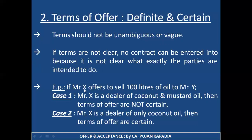To make our understanding clearer, here is a good example. Mr. X offers to sell 100 liters of oil to Mr. Y. In the first scenario, Mr. X is a dealer of both coconut and mustard oil. In this case, this offer is not certain — because Mr. X has not clarified whether he wants to sell coconut oil or mustard oil. Since he deals into two different types of oil, the terms of the offer are not certain.